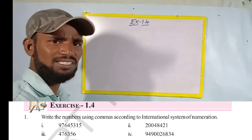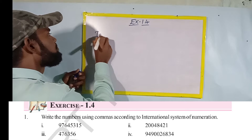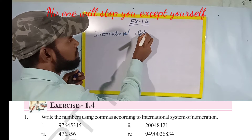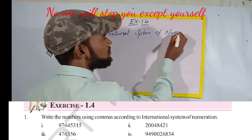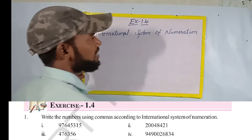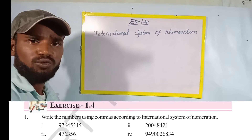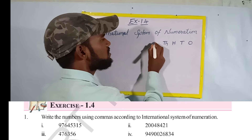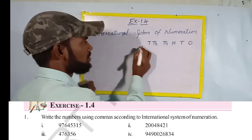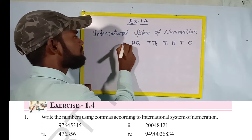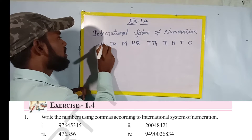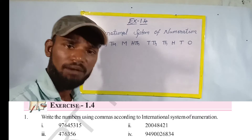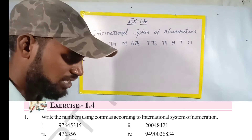First we have to know what is the international system of numeration. We know that: ones, tens, hundreds, thousands, ten thousands, hundred thousands, millions, ten millions, hundred millions, billions. This is the international system. Now we have to use commas — after every three digits from the right we have to place the comma.